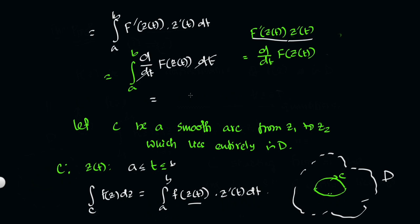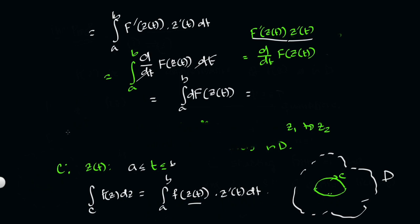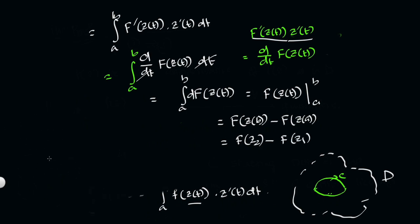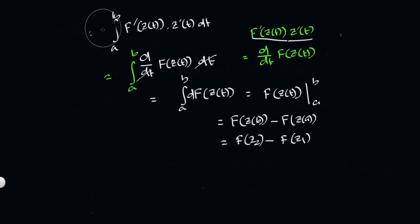The d/dt cancels with dt, so we integrate d of F(z(t)) from a to b. Evaluating at the limits, we get F(z(b)) minus F(z(a)), which is F(z2) minus F(z1). Therefore, the contour integral of f(z) dz over C equals F(z2) minus F(z1). This completes the proof of 1 implies 2 for a smooth arc.